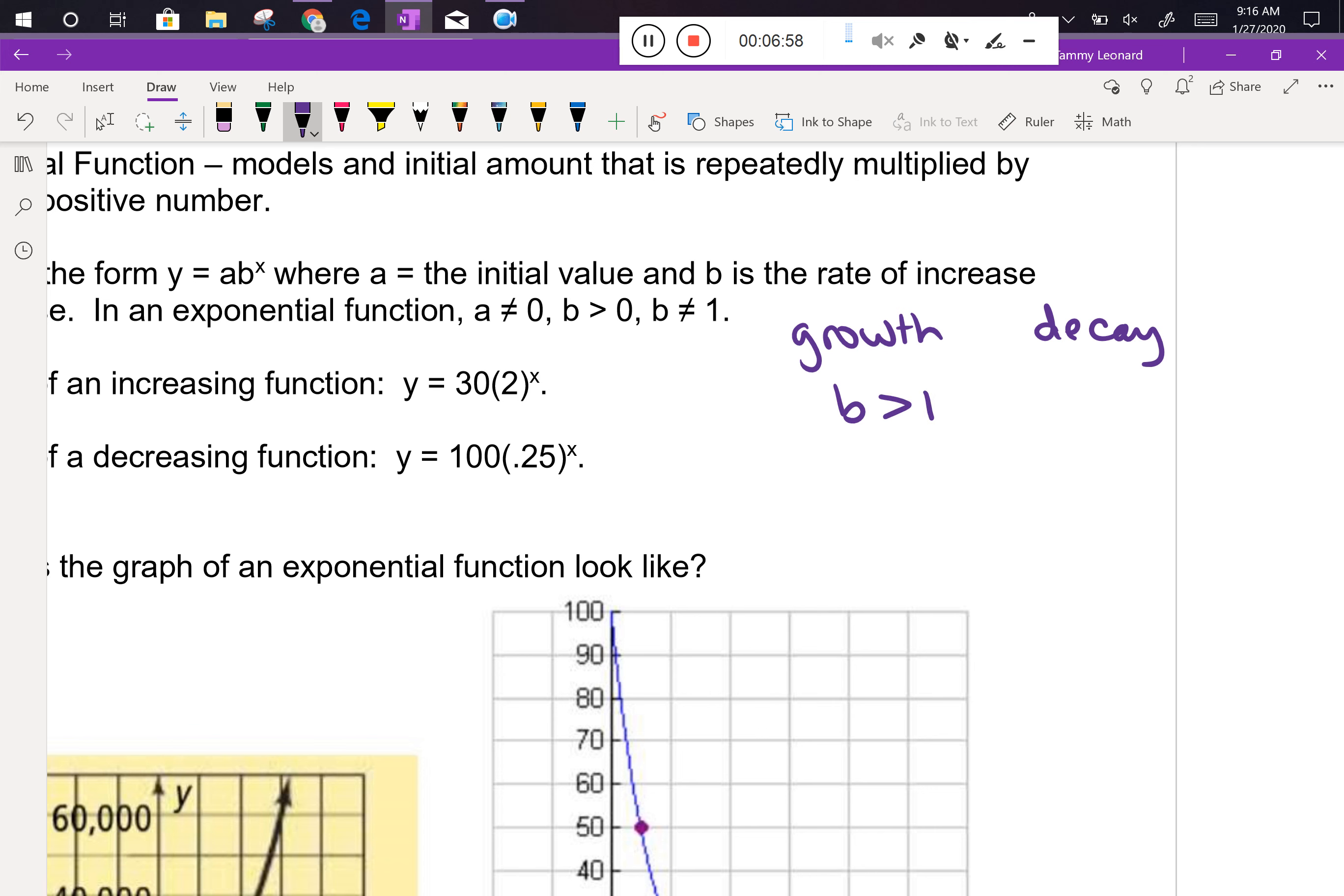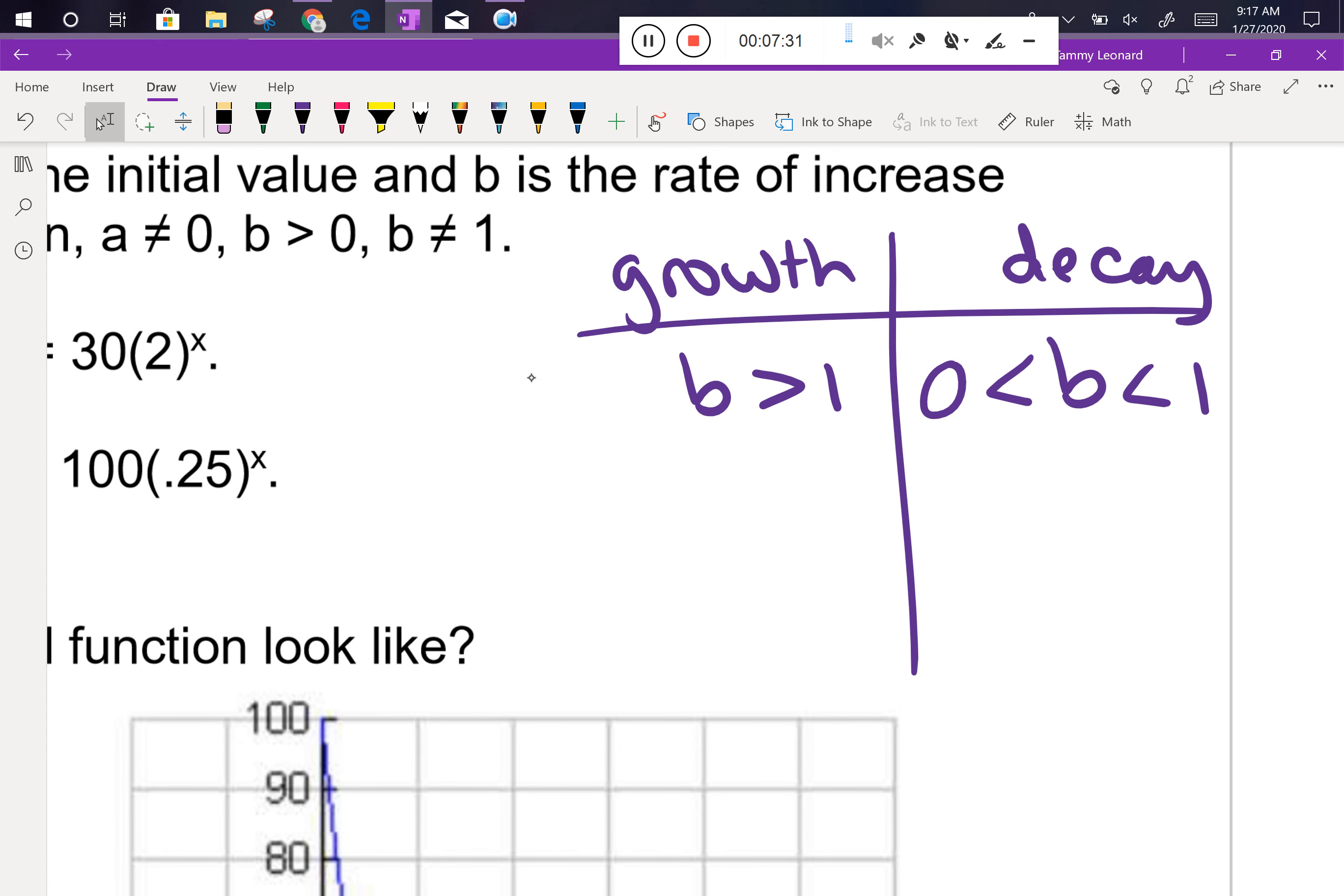So growth is going to have a b value that's bigger than one. B is called the rate of increase or the rate of decrease. There's a lot of vocab that goes into exponential functions. So b is what controls whether something is growing or decaying. If b is greater than one, it's growing. If b is less than one but still bigger than zero, then it's decaying. We grow if b is bigger than one. We decay if b is between zero and one. So we're thinking decimals, fractions that are between zero and one. Those are our boundaries.